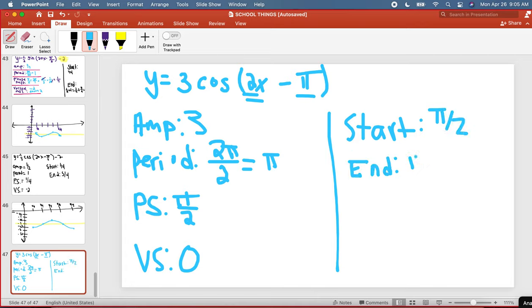So notice how the graphs are similar. All the properties are the same. The shape is different. So sines and cosines, if you know one, you should know the other one, as long as you can change the shape. See you.